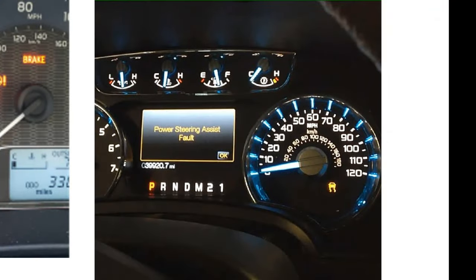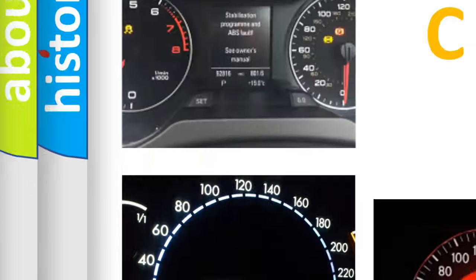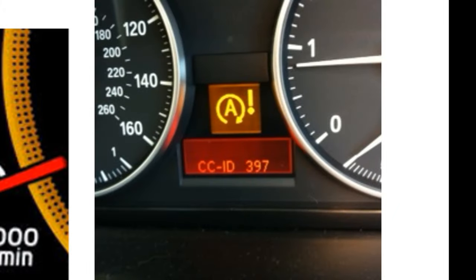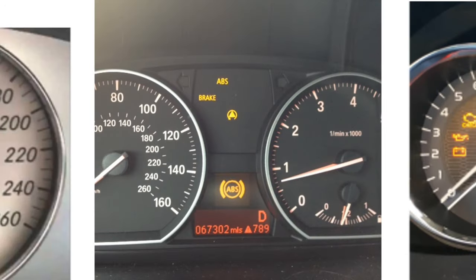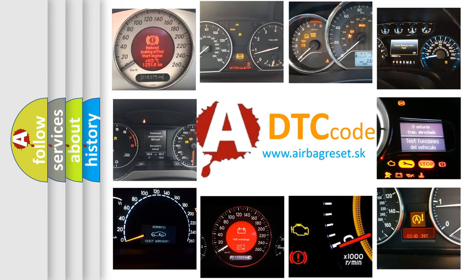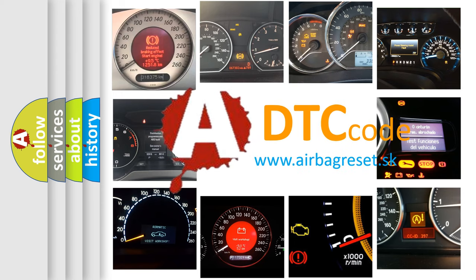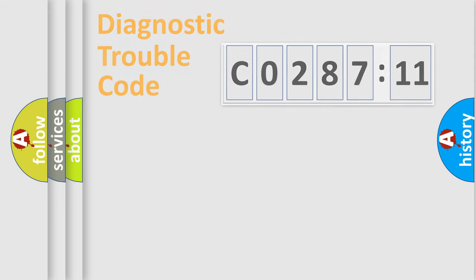Welcome to this video. Are you interested in why your vehicle diagnosis displays C0287:11? How is the error code interpreted by the vehicle? What does C0287:11 mean, or how to correct this fault? Today we will find answers to these questions together.